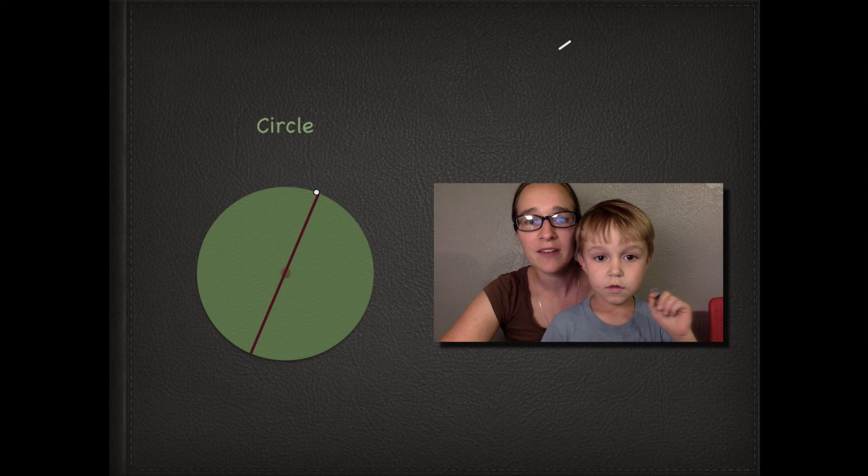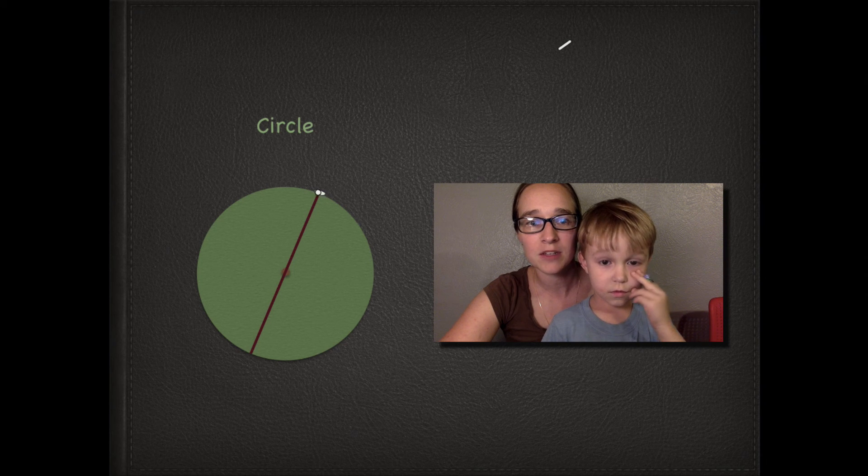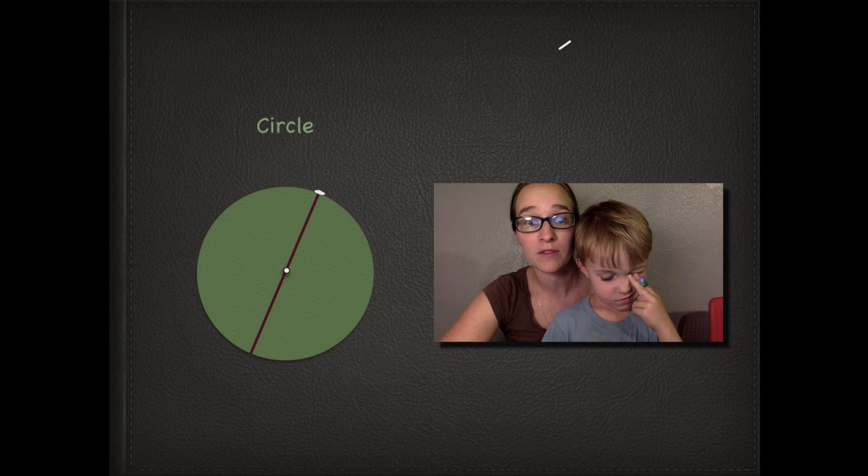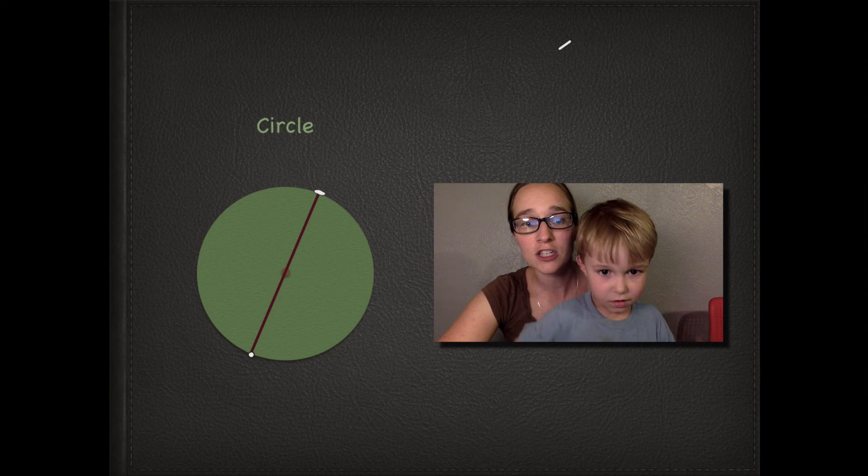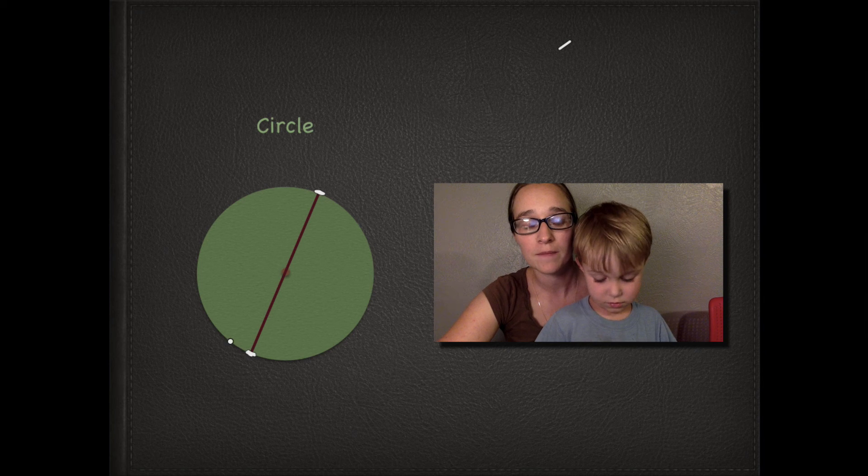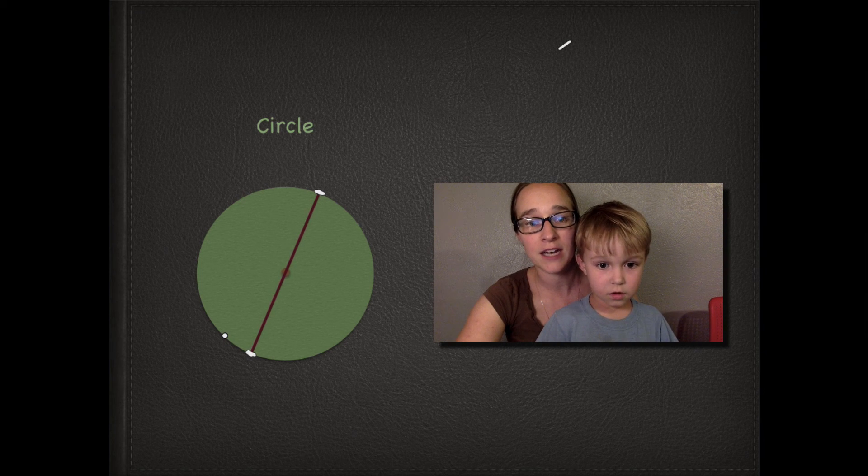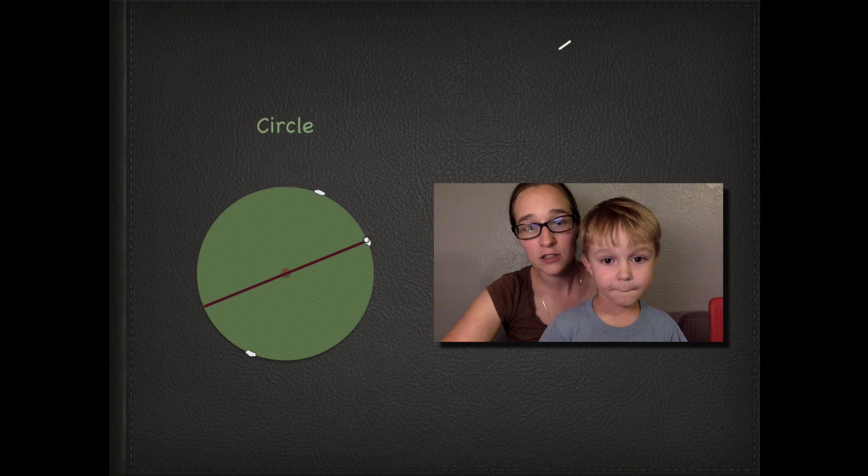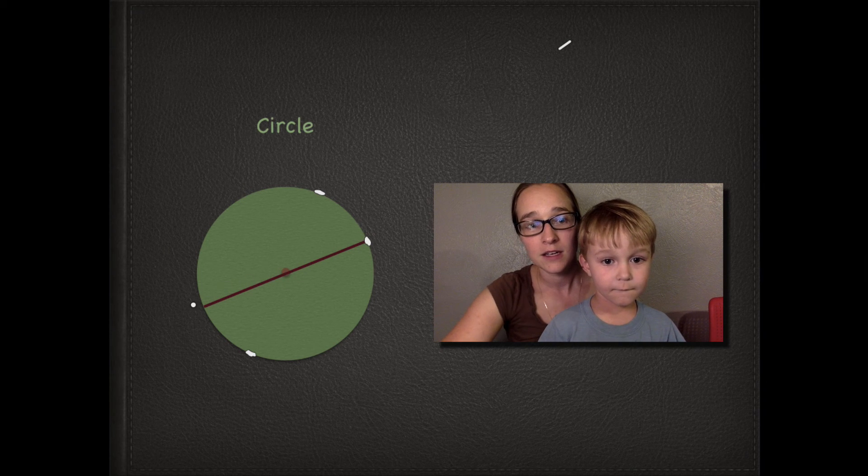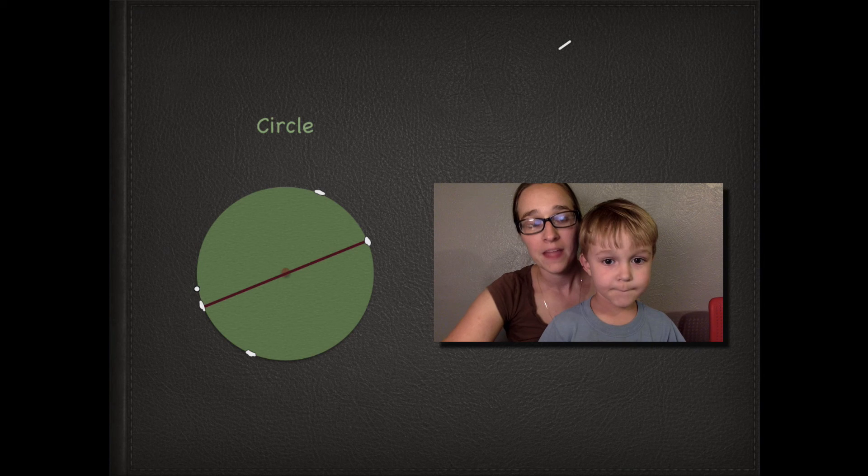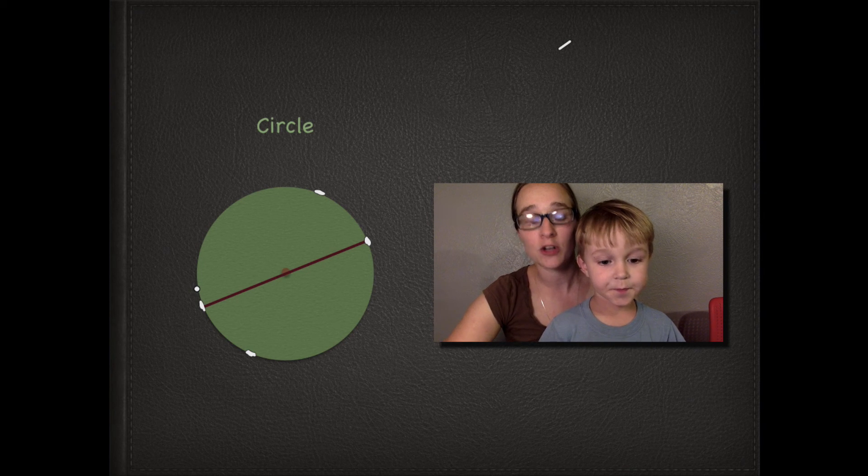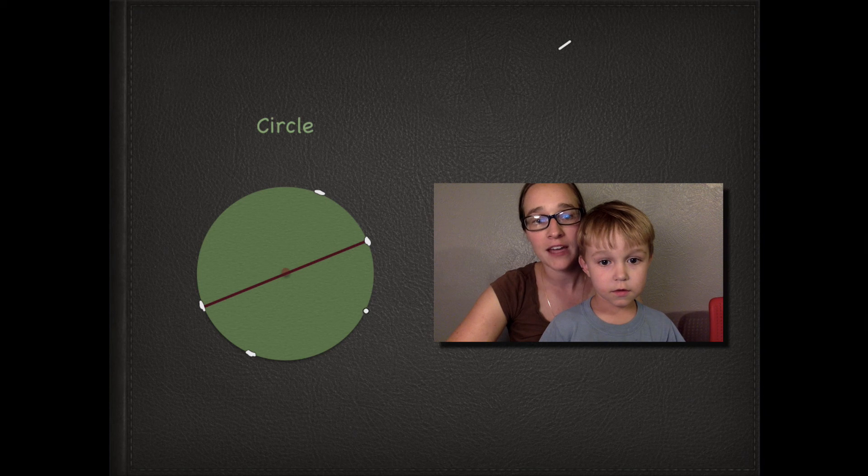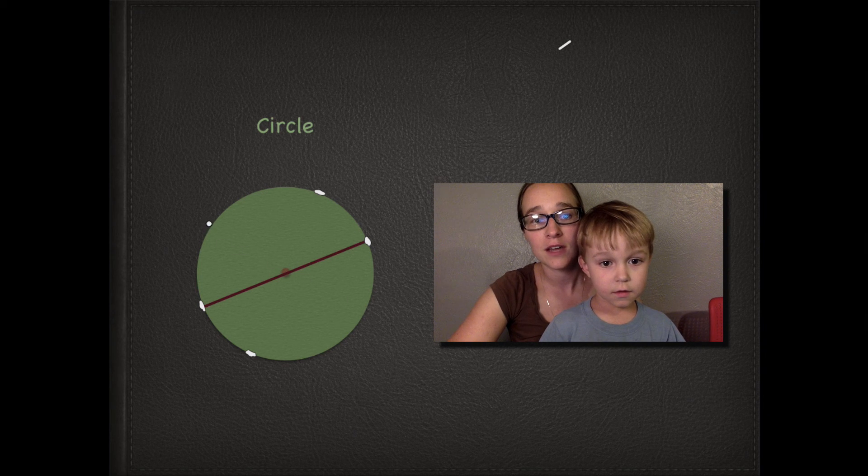And if we have our diameter here, you can see the diameter touches the edge of the circle here, it touches the center, the midpoint of the circle here, and it touches the edge of the circle here. Now if we rotate our diameter, it still touches the edge and the center and the edge. So our circle's diameter, no matter what way we spin it, will always touch the edge, the middle, and the edge.